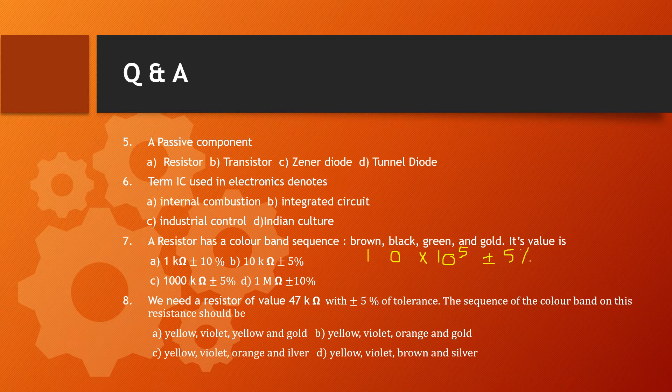The value is 10 × 10 to the power of 5. This equals 1 megaohm, which is the same as 1000 kilohms. Option C is 1000 kilohms and Option D is 1 megaohm — both represent the same value. The correct answer is Option D, 1 megaohm.